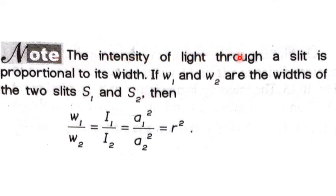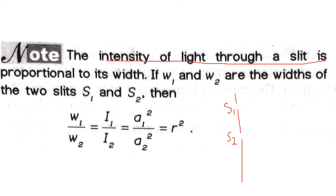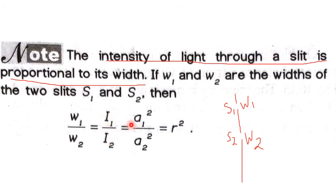Note that the intensity of the light through a slit is proportional to its width. If W1 and W2 are the widths of slits S1 and S2 — the bigger the width, the more light enters — then W1/W2 = I1/I2 = A1²/A2². Since A1/A2 equals the amplitude ratio R, we have W1/W2 = R².